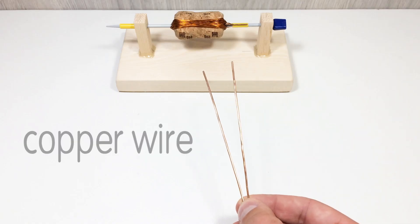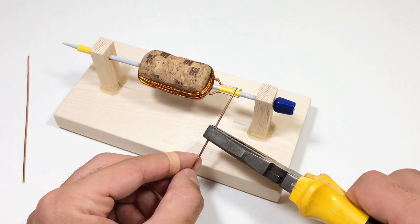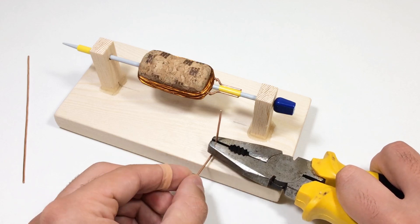Then we need two pieces of copper wire. From these pieces of wire we will make brushes for the electric motor.